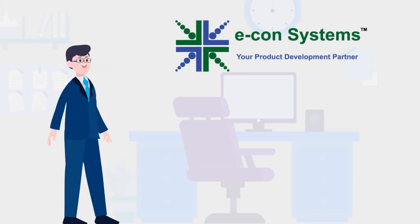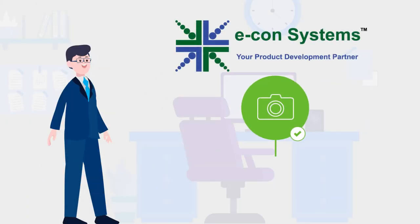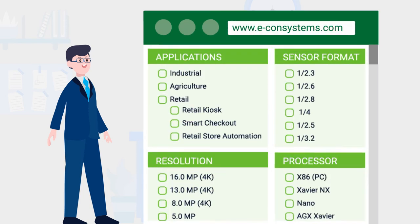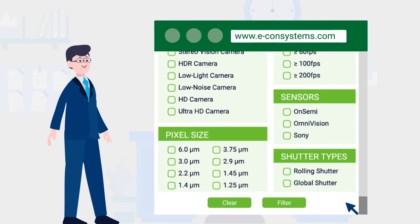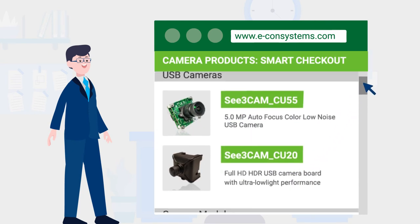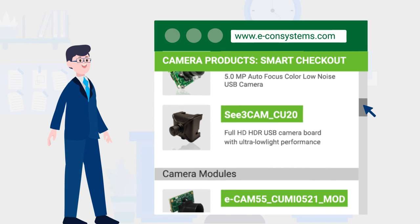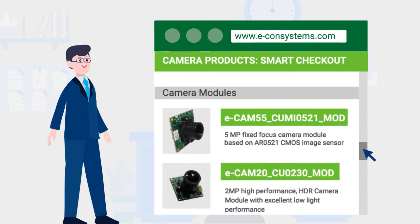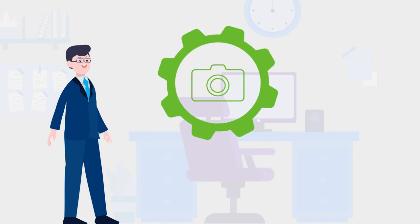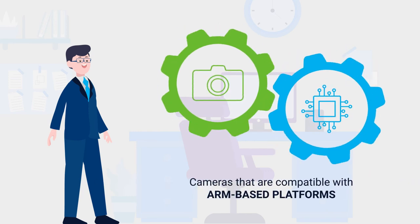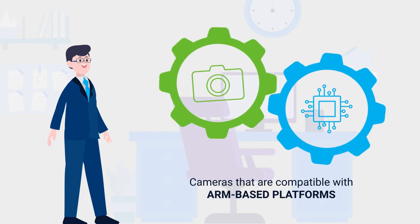By partnering with Econ, Jordan would have no challenge in picking an HDR camera to account for varying lighting in a retail store. Leveraging its wide portfolio of cameras and extensive customization services, Jordan can develop smart trolley and smart checkout systems with a camera having good color reproduction and adequate depth of field.